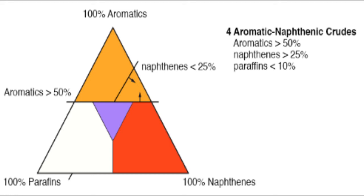To the right of that line, everywhere is naphthenes greater than 25 percent. With these two boundary lines — aromatics greater than 50 percent and naphthenes greater than 25 percent — we are confined to that little orange triangle in the ternary diagram. Now we need to place the third boundary line: paraffins less than 10 percent.